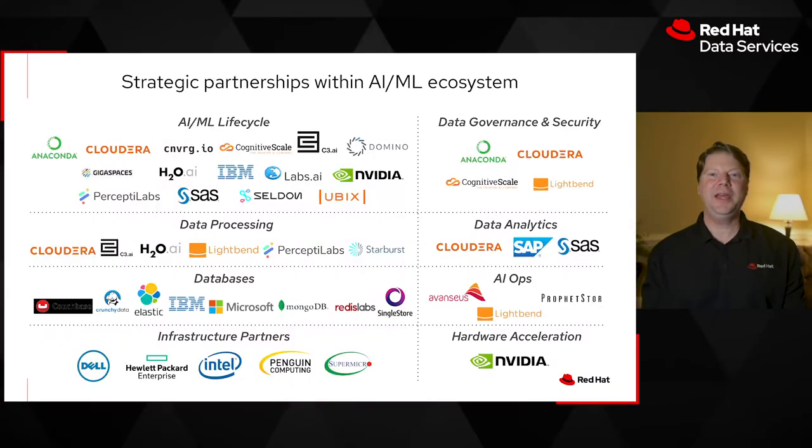We also use Open Data Hub as a framework to enable customers to deploy third-party applications onto their platforms. Red Hat has built an entire technology partner ecosystem on top of Kubernetes. AI and machine learning is represented by over two dozen technology partners, several of which can plug into the Open Data Hub or can be used to extend the core capabilities of the open source tooling.